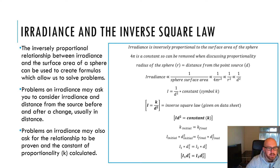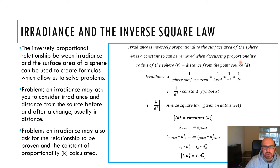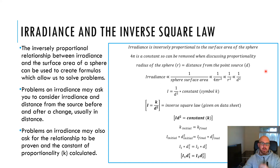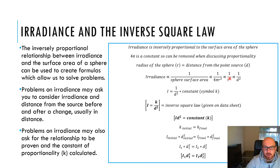So, irradiance is inversely proportional to the surface area of the sphere. As irradiance drops, the surface area of the sphere gets bigger. The formula for the surface of a sphere is 4πr², and since 4π is a constant we can remove it. The radius of the sphere is the same as the distance from the point source, so irradiance is proportional to 1/(4πr²), which simplifies to 1/r², and we can write r as d, giving 1/d². Therefore I = k/d² for some constant k.